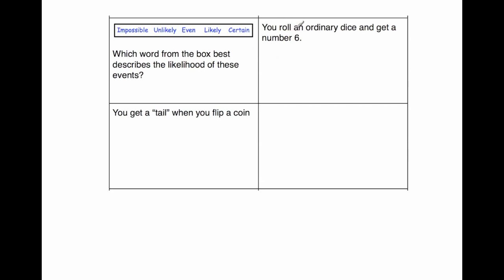It says, you roll an ordinary dice and get the number six. So obviously there's six numbers on the dice, and you can get the number six, but because there's six of them and there's only one number six, the probability would be unlikely. It's unlikely you get it on just one roll of the dice.